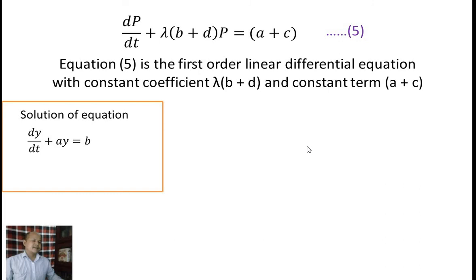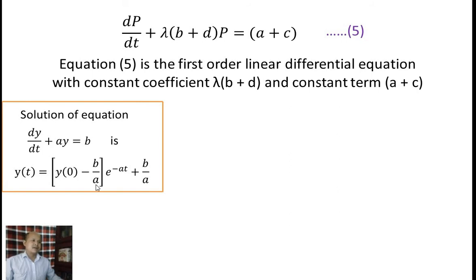The solution of dy/dt plus ay equals b is: y(t) equals (y0 minus b/a) times e to the power minus at, plus b/a. That is the general solution of a first order linear differential equation with constant coefficient a and constant term b.